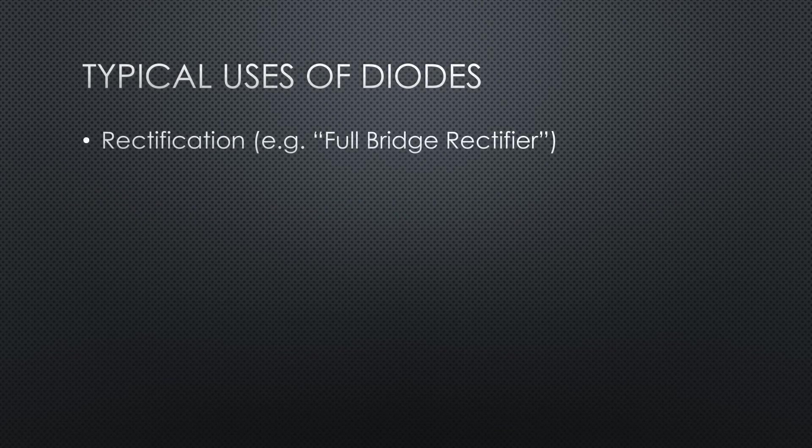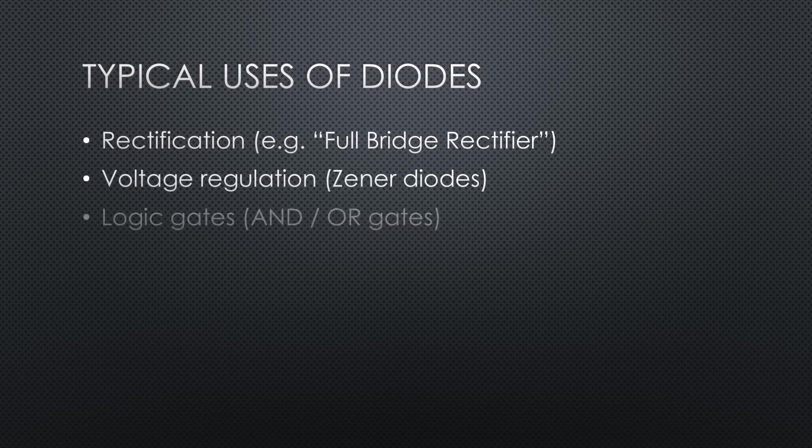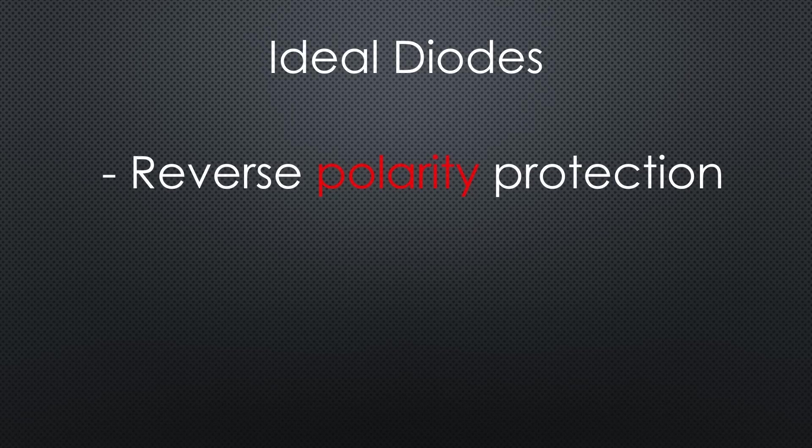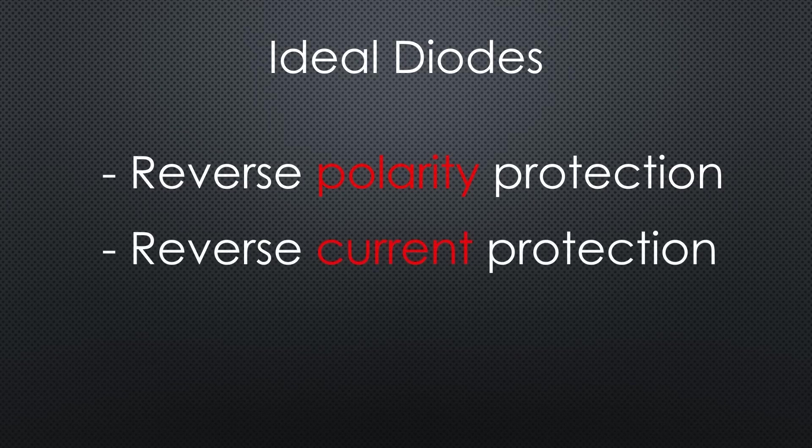Diodes have many uses, from power electronics to radio frequency applications. The ideal diodes we talk about today are mainly used in two fields. First, reverse polarity protection. Please comment on your most spectacular incident where you unintentionally reversed polarity and what happened. Second, reverse current protection. Inductive loads like motors create reverse currents that can have devastating effects, or if you want to protect parallel power sources from interfering with each other.